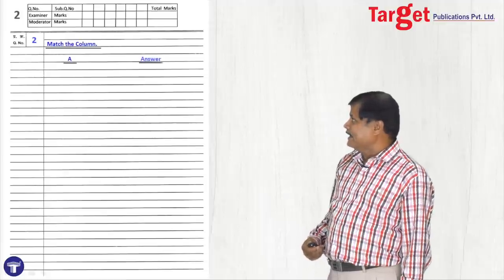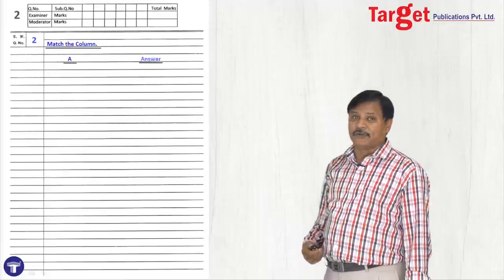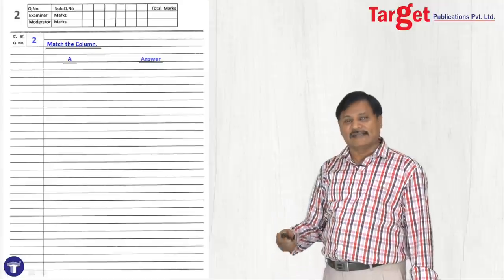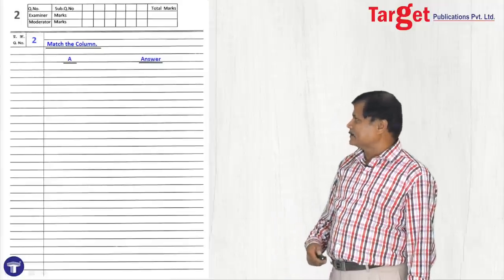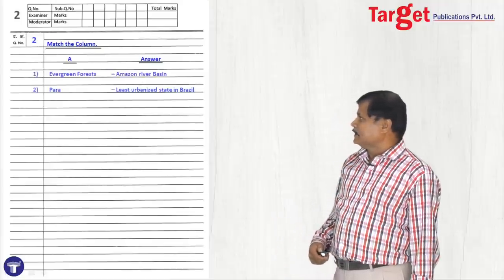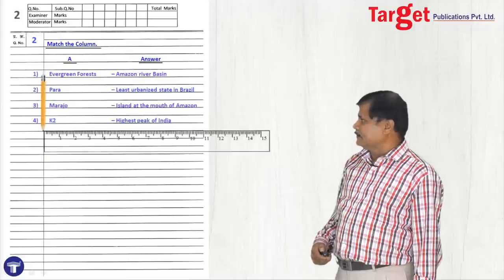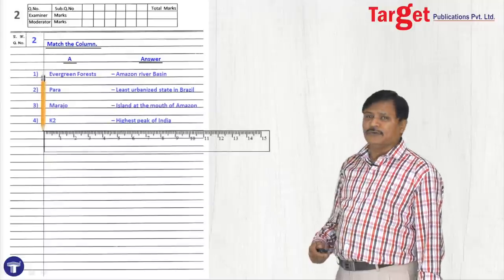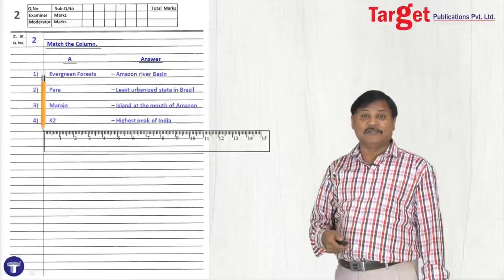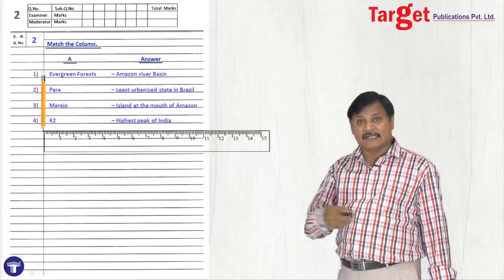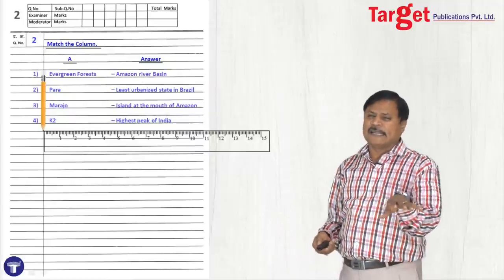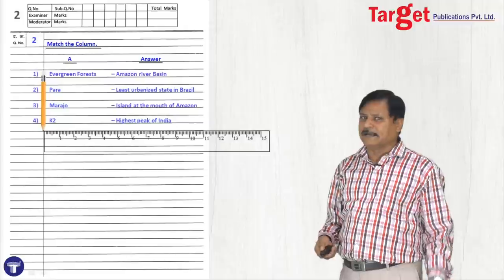For match the following, write 'a' then the answer. Do not write a, b, c as options. Leave a line between each answer pair. Do not draw lines after every single answer in objectives — that is a wastage of time and the paper will look like line after line after line.